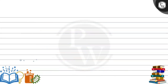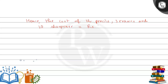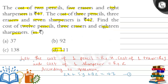Finally, hence the cost of 12 pencils, 3 erasers and 18 sharpeners equals Rs. 111. This is our required answer. Option D is correct — Rs. 111. So I hope you understood the solution. Thank you, all the best.